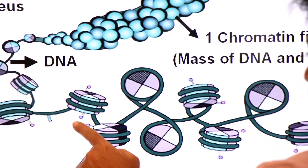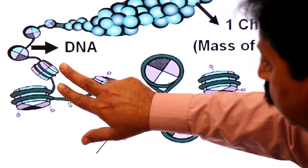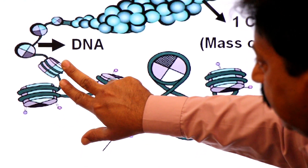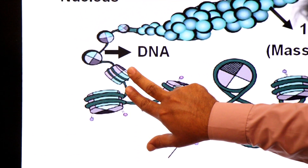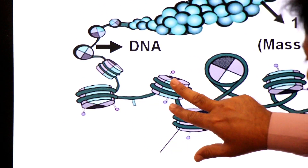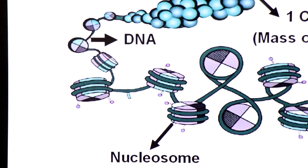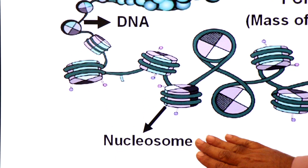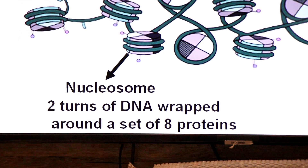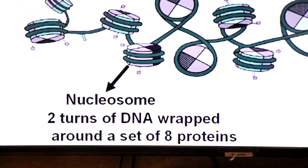This is DNA. It is wrapped around histone proteins, forming nucleosomes. Two turns of DNA around eight histones is called one nucleosome.